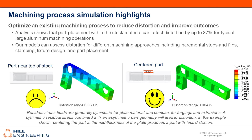Another possibility is to optimize existing machining processes to reduce distortion. In this example of a typical large aluminum machining operation, part placement in the stock material affects the distortion by 87%. Why is placement such a large factor? Well, for plate material, residual stress fields are generally symmetric, whereas they're a lot more complex in forgings and extrusions. So for this example, placing the part at the center of the stock material rather than near the top where it originally was leads to far less distortion.